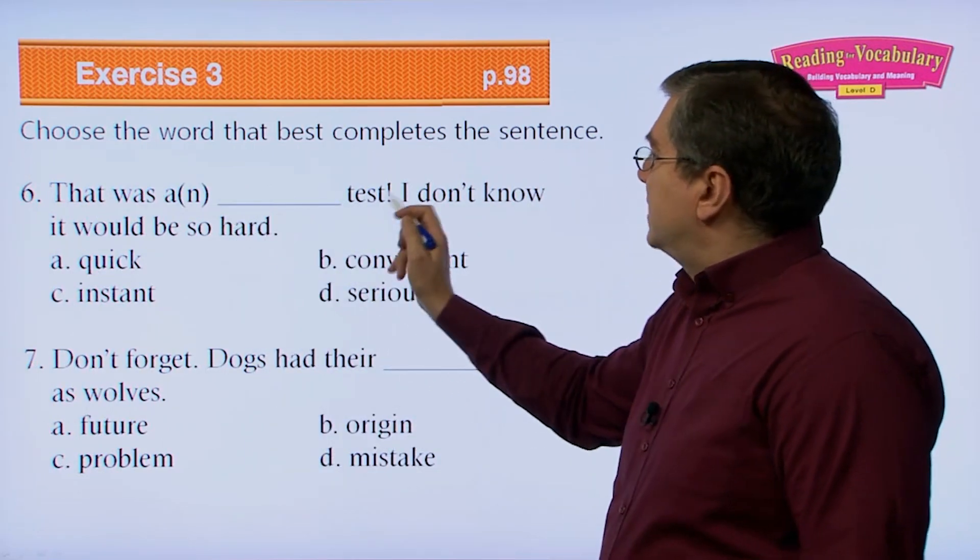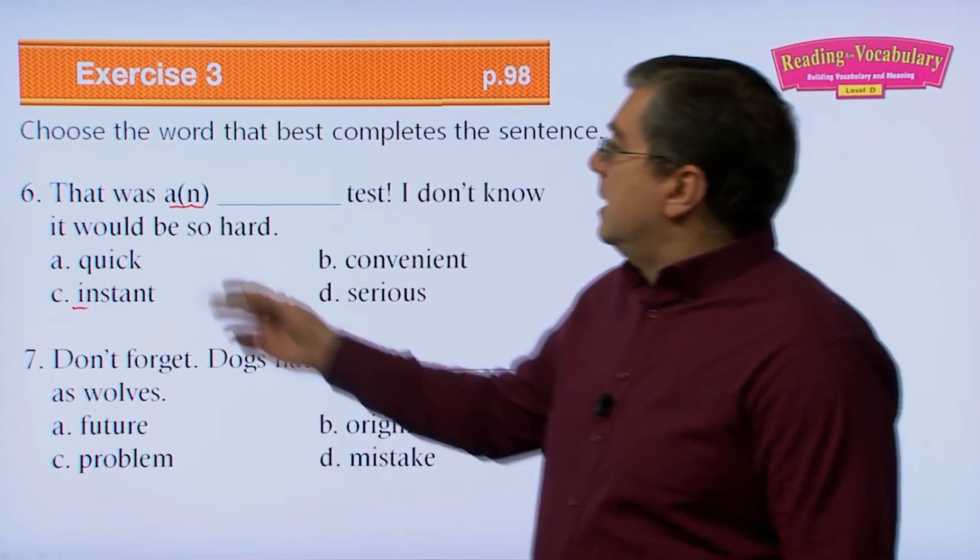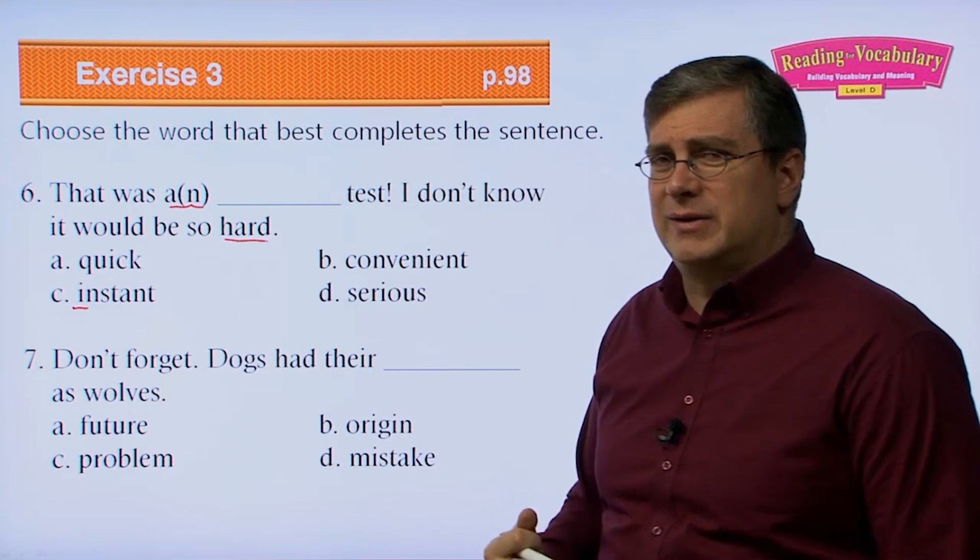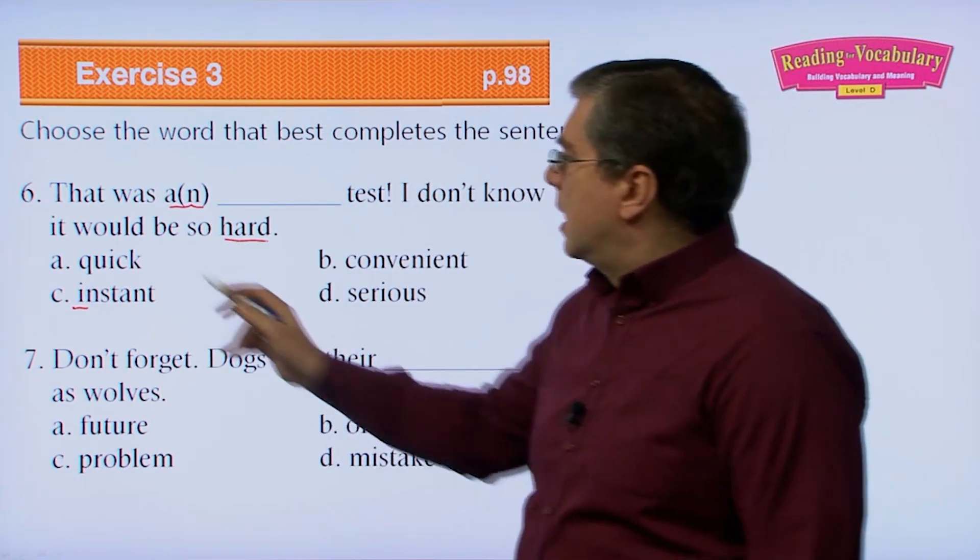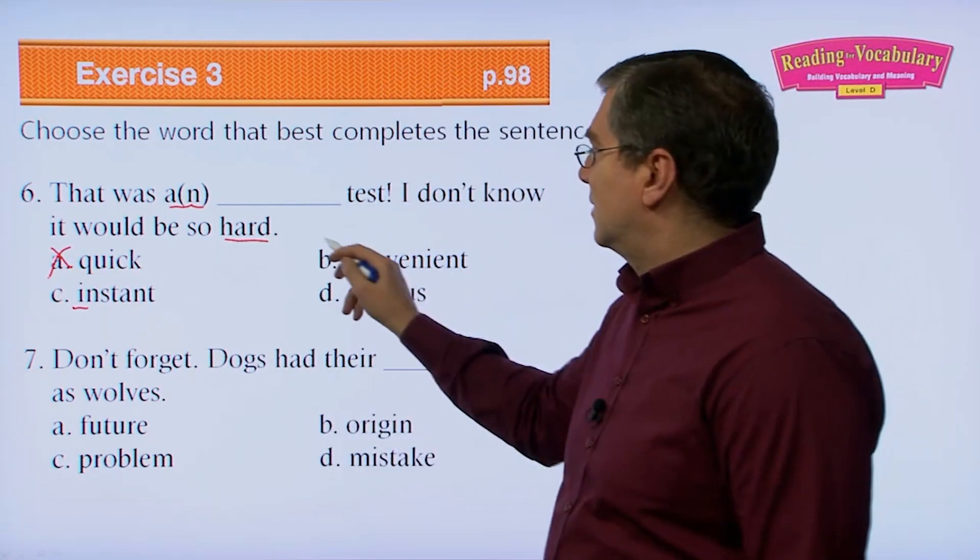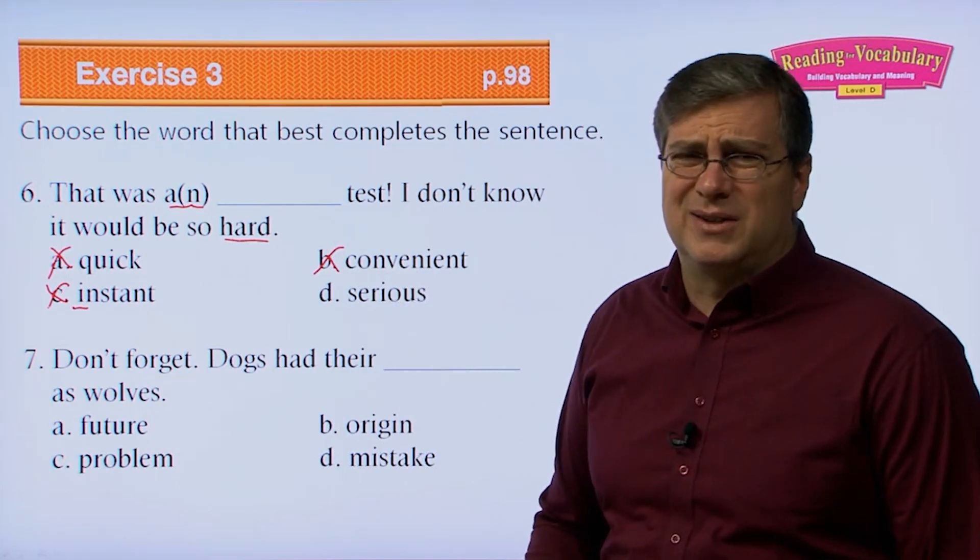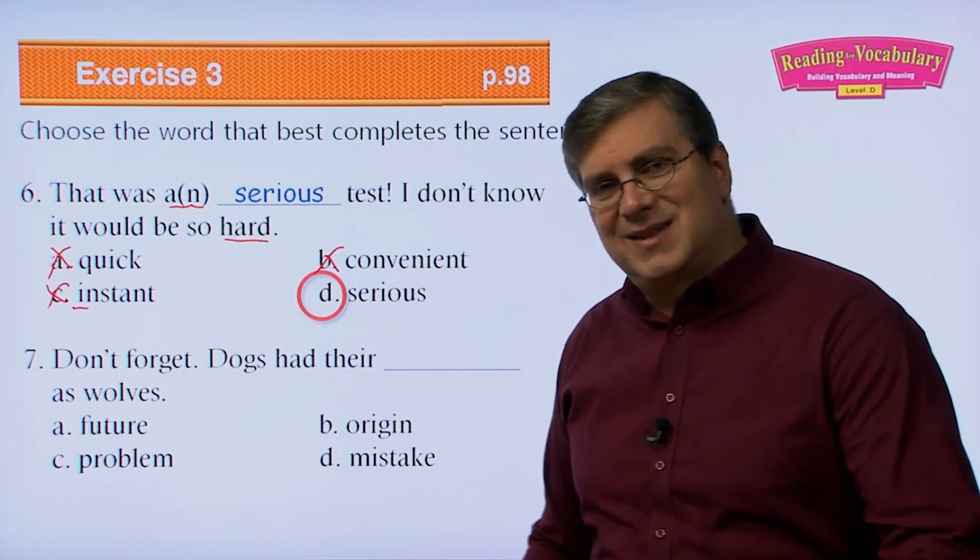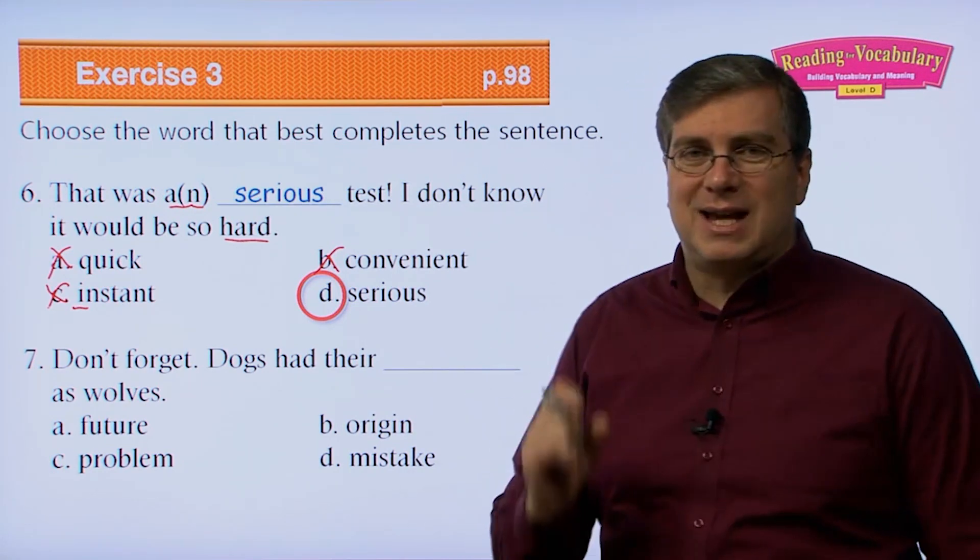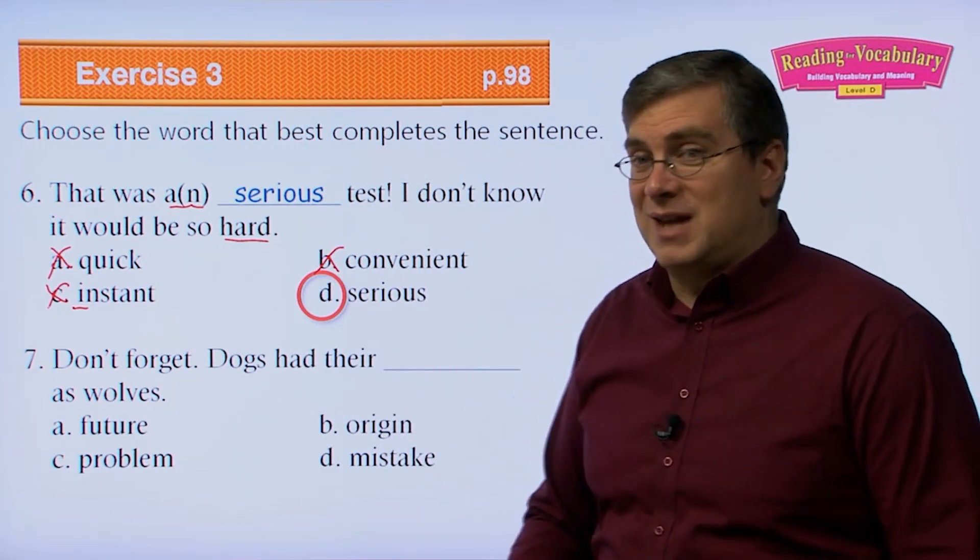Six, that was a beep test. We have a or an, because some of the answers start with a vowel. What was it? That was a what kind of test? A what kind of test is a hard test? What kind of test is a hard test, a difficult test? A quick test? No. Hard tests are not quick. B a convenient test. Convenient means easy. So that's not true. It's a hard test. It's an instant test. Instant and quick are similar, but that doesn't make sense. It was a serious. Yeah, it was a serious test. It was difficult. Remember, serious doesn't always mean dangerous. A test cannot be dangerous, but it can be very difficult or severe. Serious. It can be a serious test. That teacher is not joking around. The teacher is very serious about us learning the material. So that was a serious test. It was a difficult test.